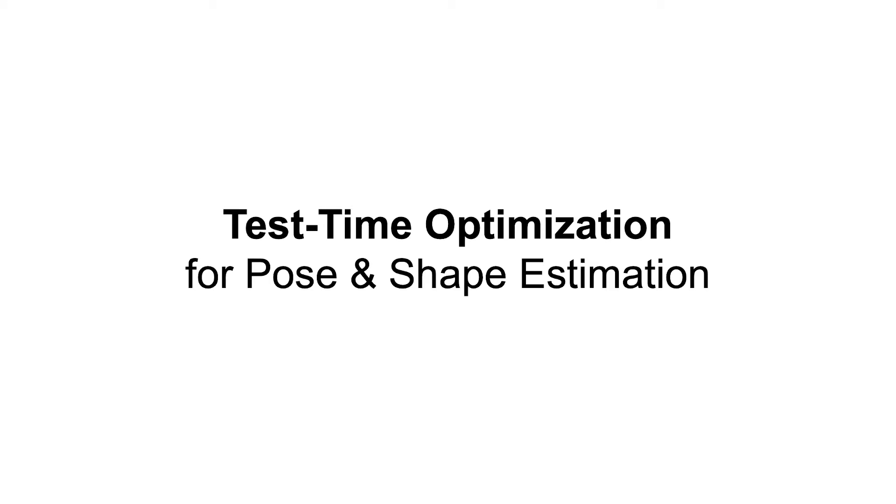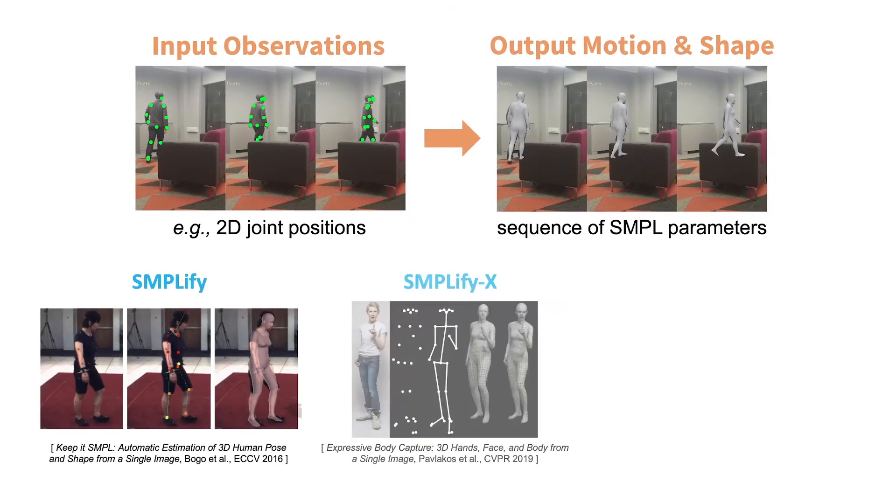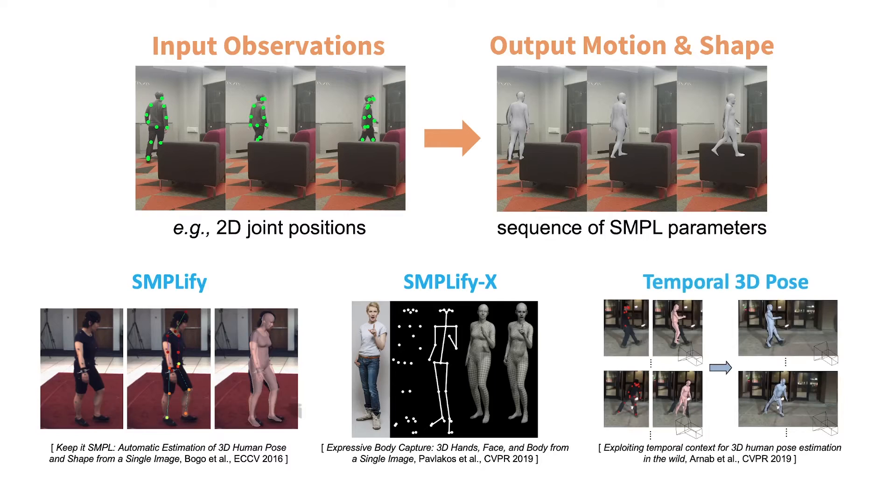We take advantage of this generative capability to improve pose estimation within an optimization-based approach. The goal of optimization is to find the 3D pose and shape of a person in the form of simple parameters. The motion must be consistent with the given input observations though, for example 2D joint positions in a video.